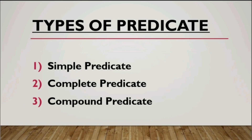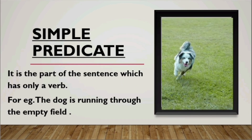We find a similar division in predicate like that of subject. The three types of predicate are: simple predicate, complete predicate, and compound predicate. Let's discuss each in detail. The first type is simple predicate — it is the part of the sentence which has only a verb. A simple predicate is the main verb or verb phrase of a sentence that tells what the subject does, and it does not contain any other modifiers.